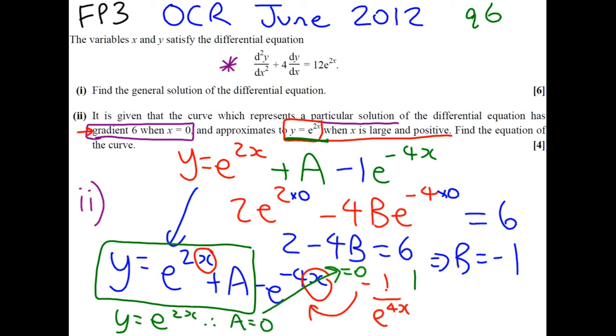Which gives our final solution that y equals e to the 2x minus e to the minus 4x. I hope this has been useful. If there's any questions, feel free to write a comment on the video.